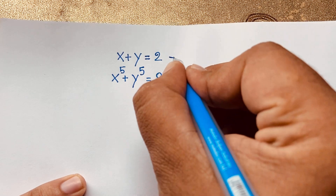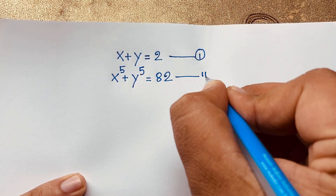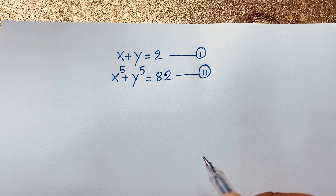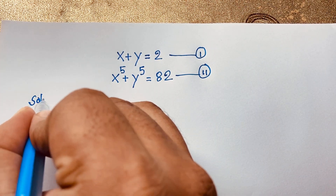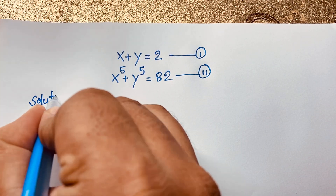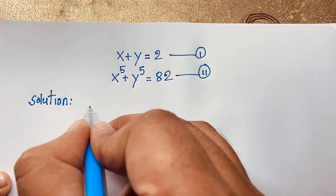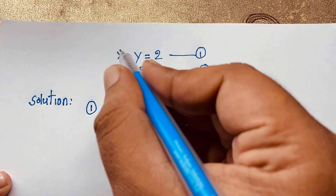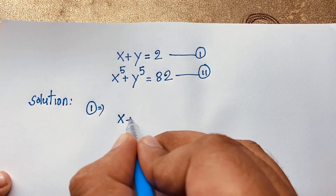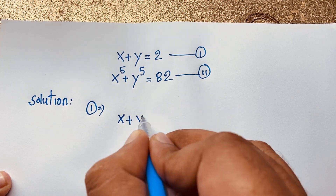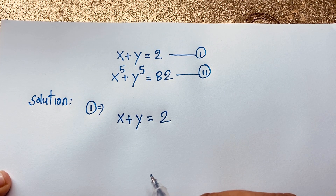This is our first equation and this is our second equation. Now, solution. First of all, we take our first equation. This equation will be x plus y is equal to 2. This is our first equation.